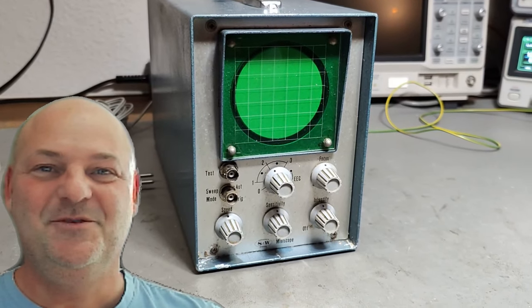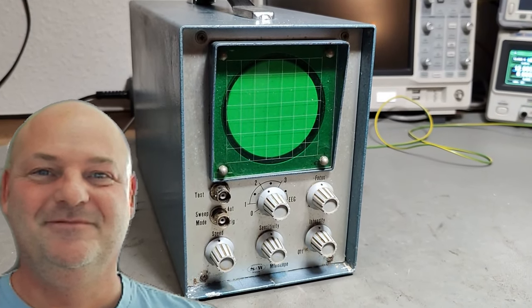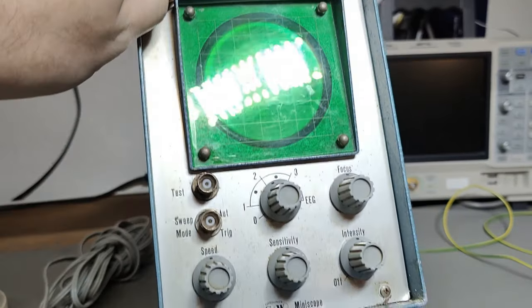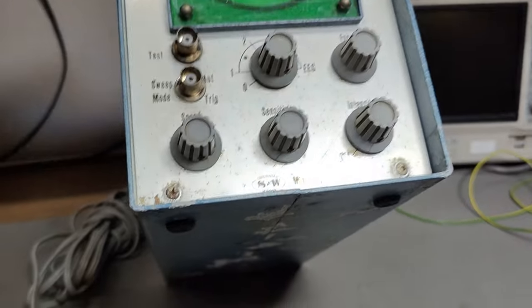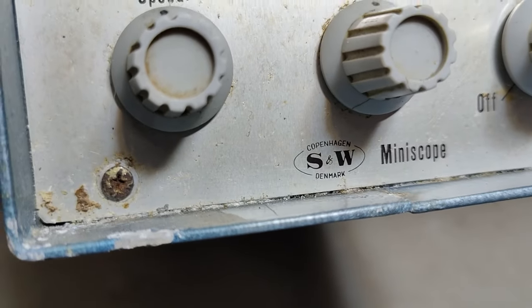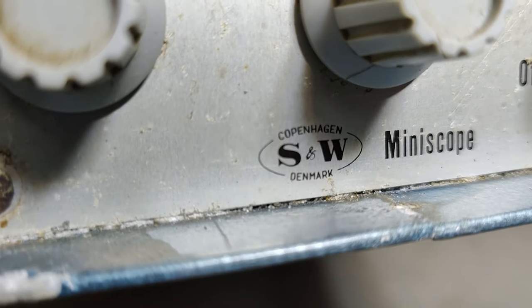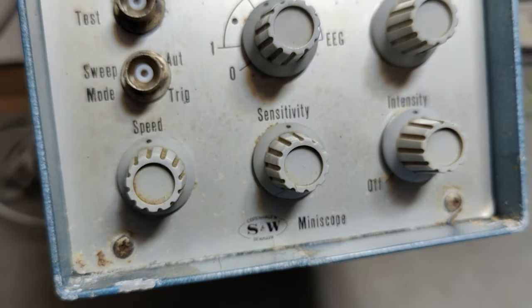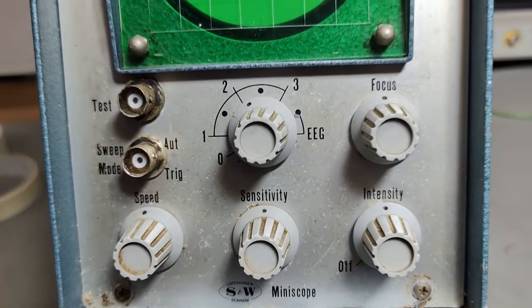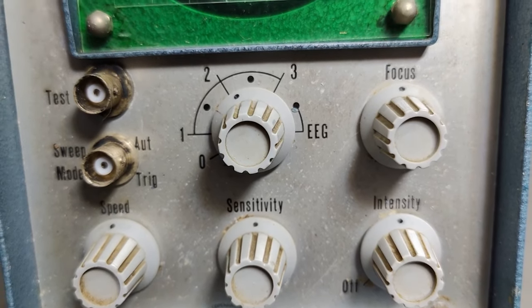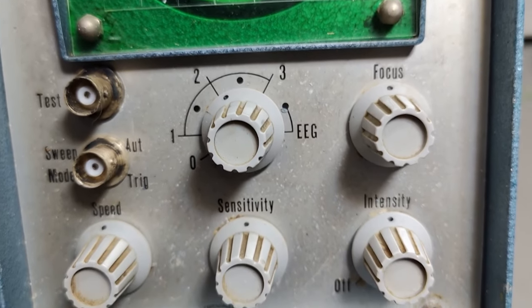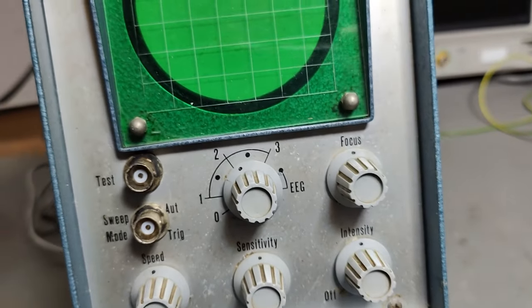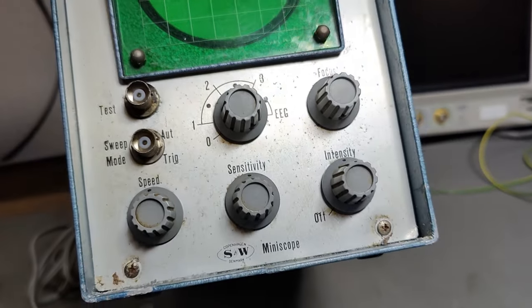Welcome to a new test and teardown video. This time it looks like an oscilloscope, but it's an S&W Copenhagen Denmark mini scope, and I think it's for some hospital application, something for EEG, which has something to do with heart pulses.